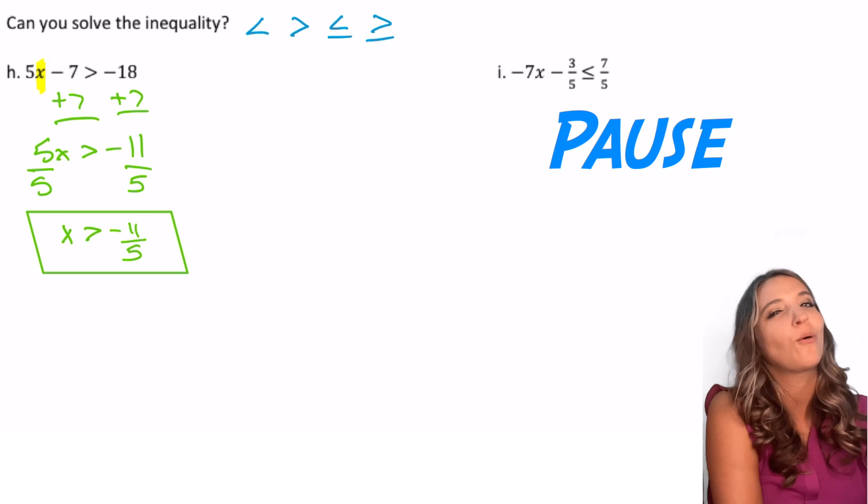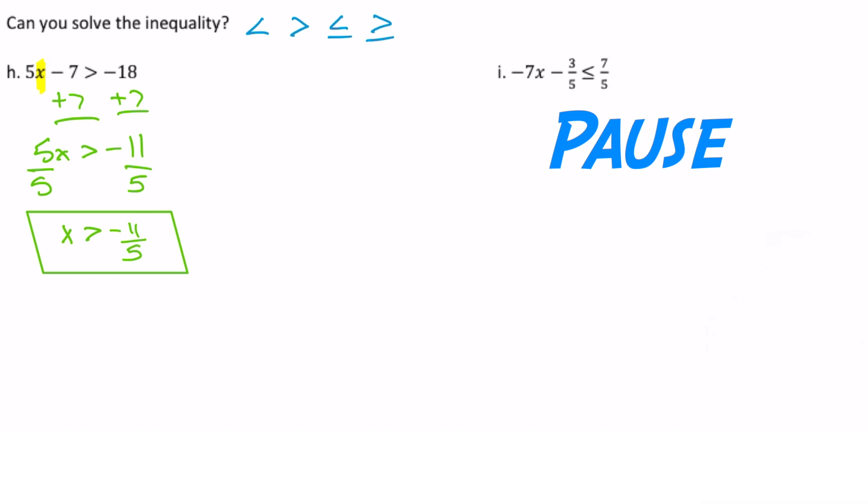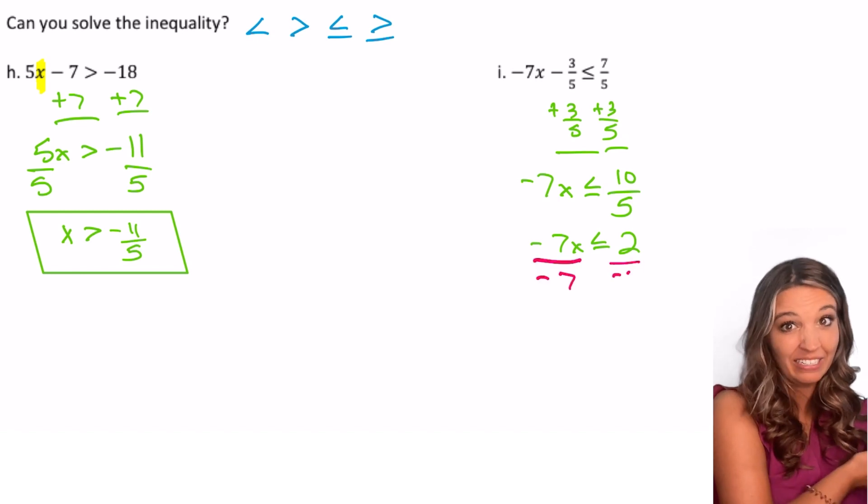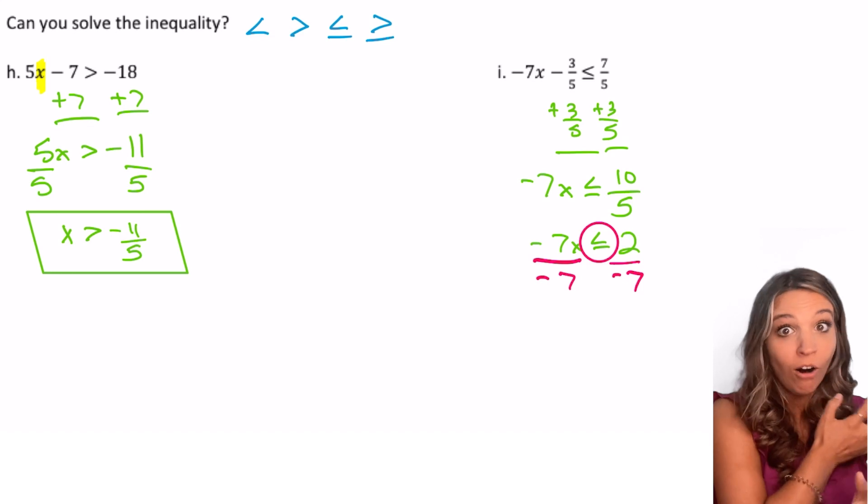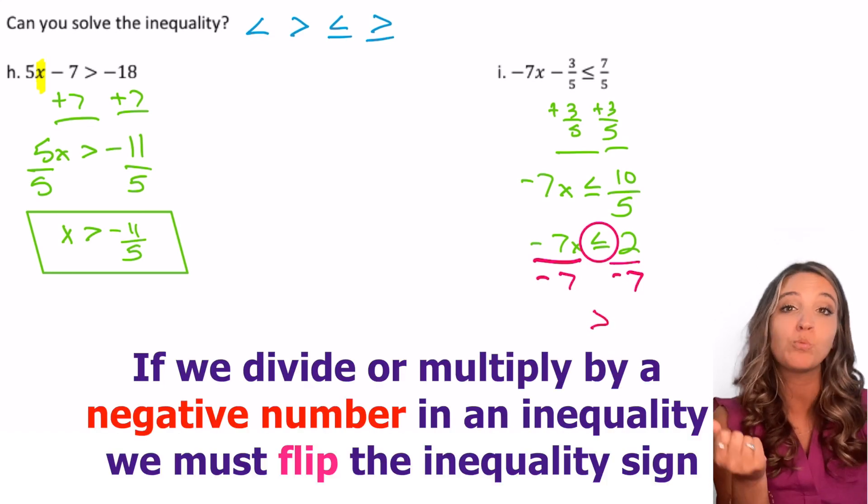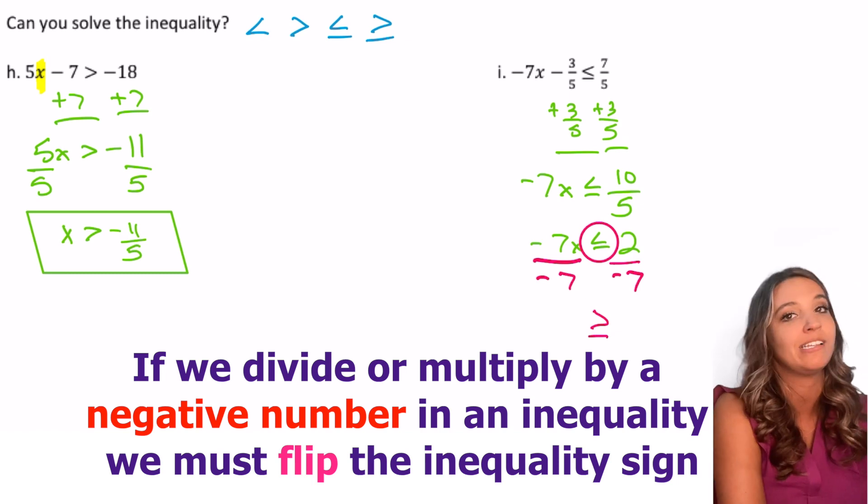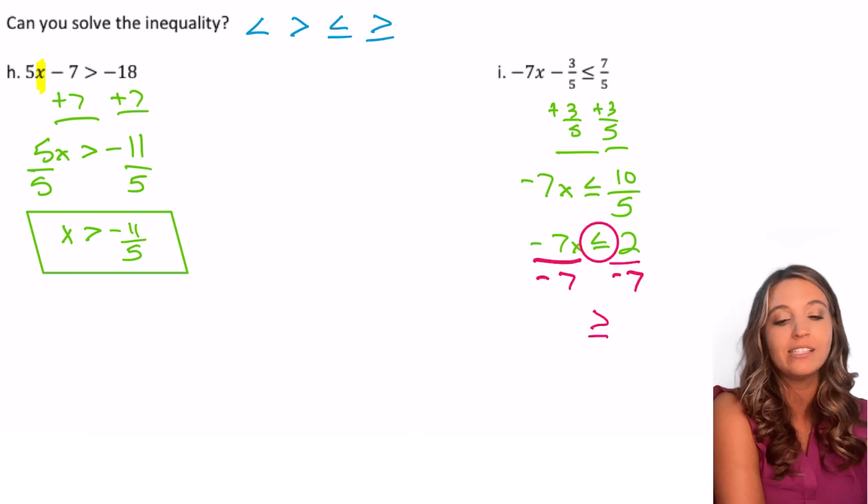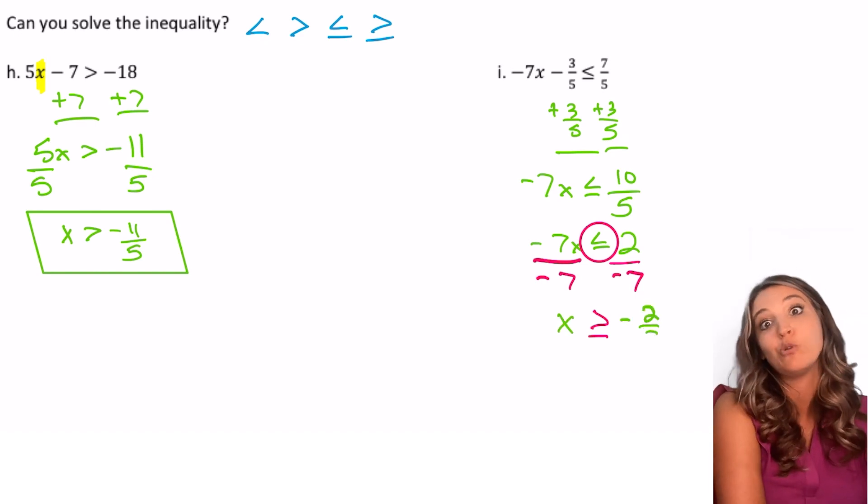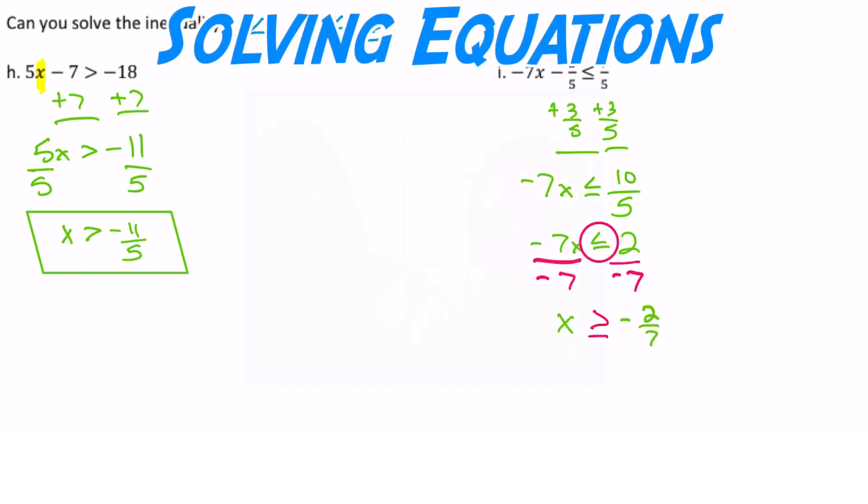Don't worry about the fraction. It works out quite nice. Did you make it this far? What would I need to do next here? Divide by negative 7. Anybody have alarms going off like I do? For inequalities, if we multiply or divide by negative numbers, we have to flip the inequality sign. So when I divide by negative 7 on both sides, I'll get x is greater than or equal to negative 2 sevenths.